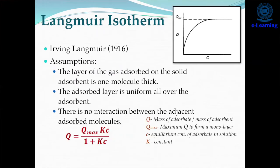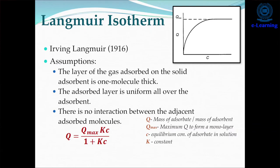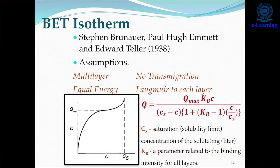The Langmuir isotherm was given by Irving Langmuir in 1916. The assumptions made are: the layer of gas adsorbed on the solid surface is one molecule thick; the adsorbed layer is uniform all over the adsorbent; and there is no interaction between adjacent adsorbed molecules. The formula for the Langmuir isotherm is: q = (q_max · k · c) / (1 + k·c).